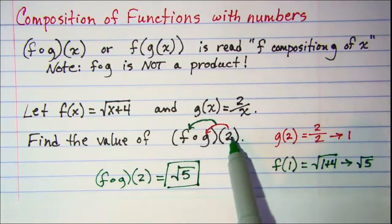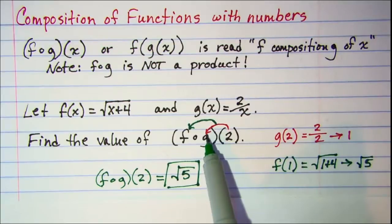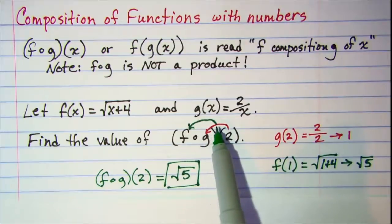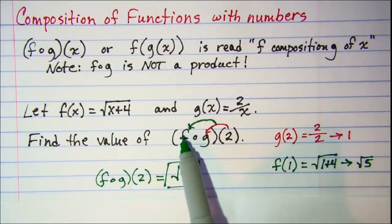So you put your argument, your number that's in the argument position here, put that into the closest function, and then whatever you get from that substitution, you put that value into your first function.